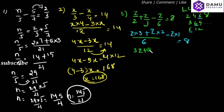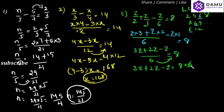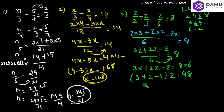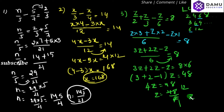So 3z plus 2z minus z by 6 will be equal to 8. Shifting 6 to the right side: 3z plus 2z minus z equals 8 into 6, which is 48. Taking common, 3 plus 2 minus 1 into z gives 4z equals 48. So z will be equal to 48 by 4, which is 12. Therefore z equals 12.